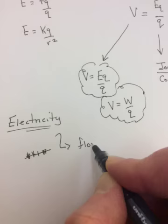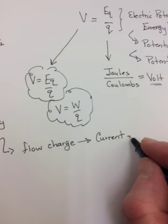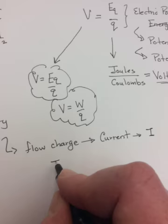So electricity is simply when you have a flow of charge. And that flow of charge is called a current. And the letter for current is a capital I.